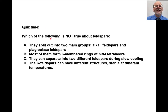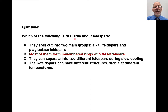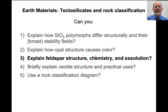Which of the following is not true about feldspars? The answer is they do not form six-membered rings of silica tetrahedra — that's typical of silica polymorphs like alpha quartz, tridymite, and cristobalite. At this point I hope you can explain a little bit about feldspar structure and chemistry. We will get into what causes exsolution in a different lecture.